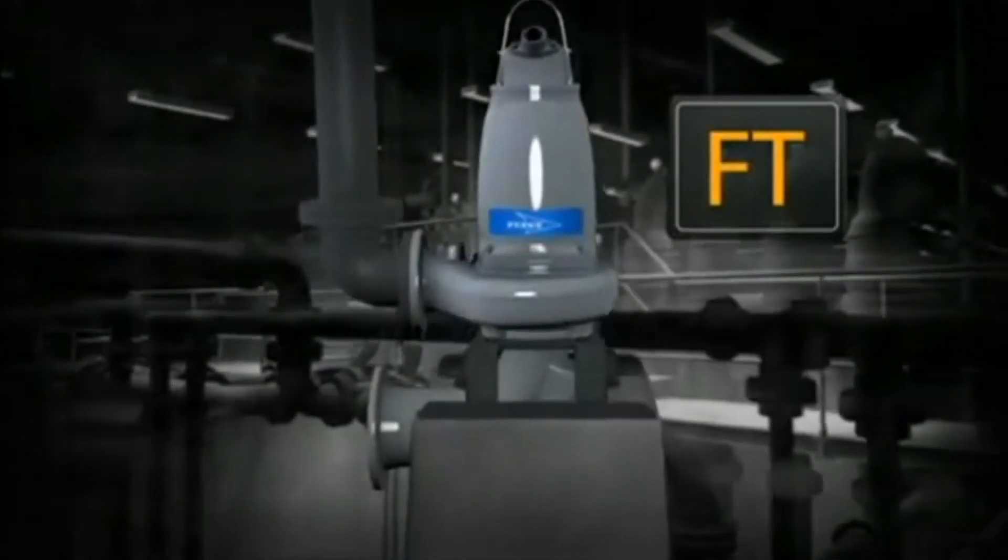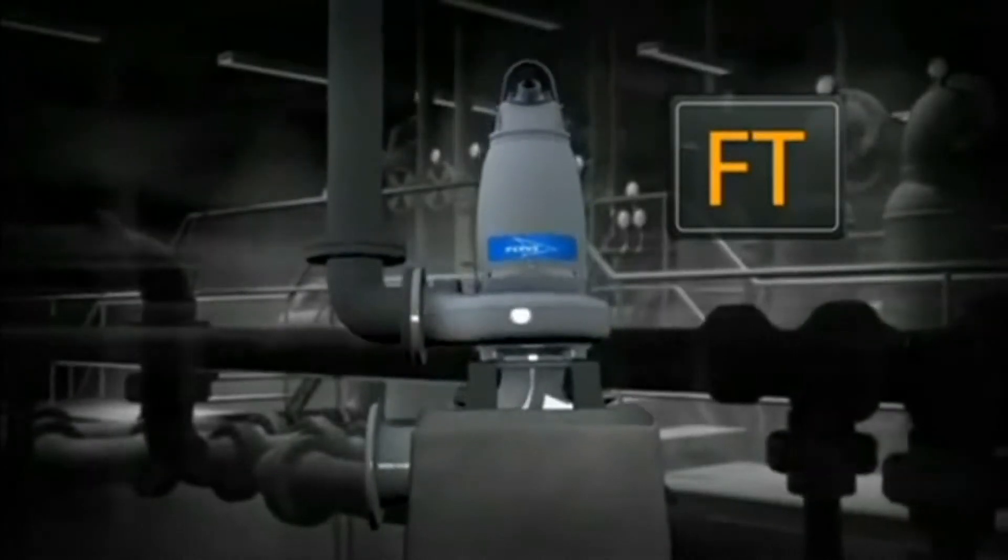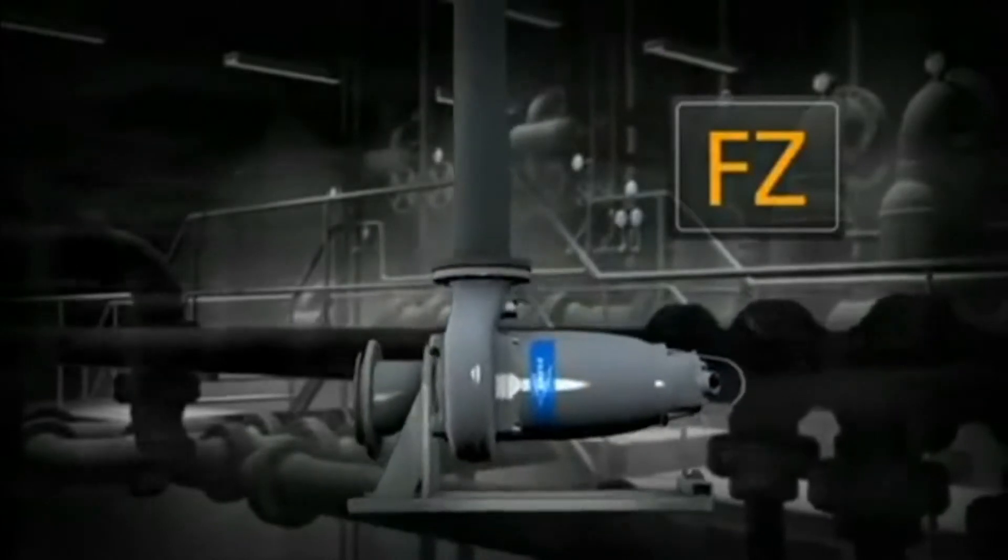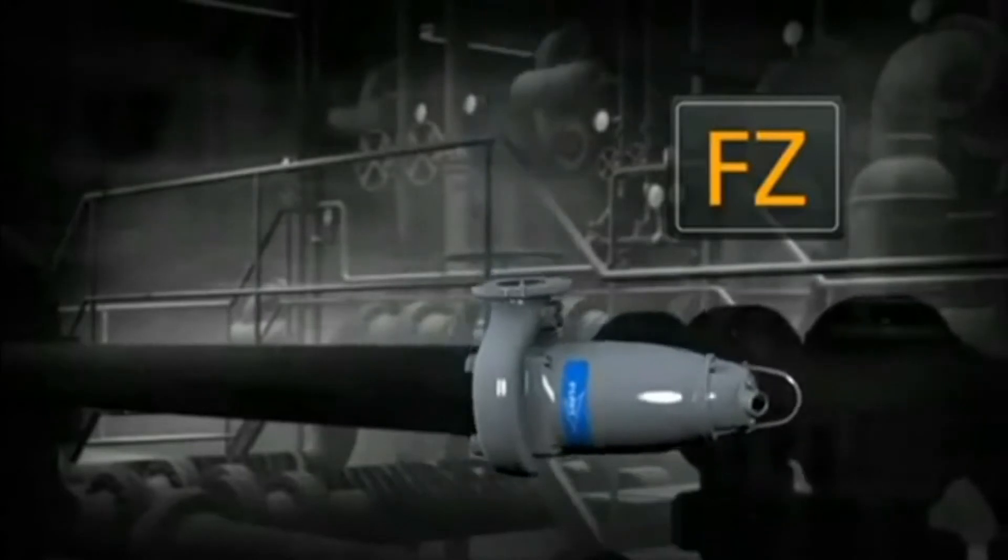F-T, a vertically mounted permanent dry well or in-line installation. F-Z, a horizontally mounted permanent dry well or in-line installation.